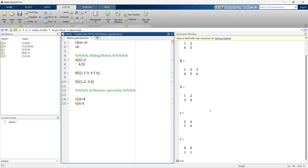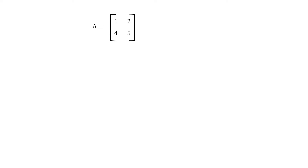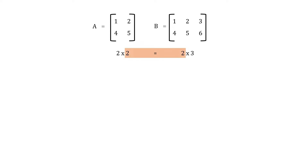But what about multiplication? Let's say we have two matrices A and B, where A is a 2x2 matrix and B is a 2x3 matrix. To multiply these two, the condition is that the inner dimensions must match. Here the inner dimensions are both 2. The size of the resultant matrix would be 2x3 — 2 from A and 3 from B.